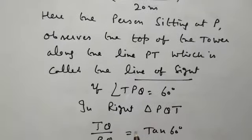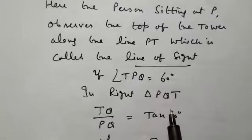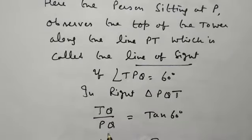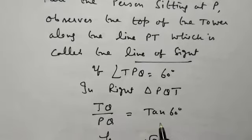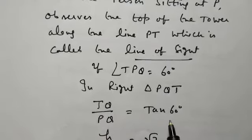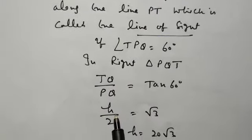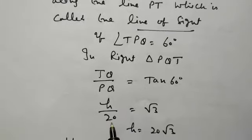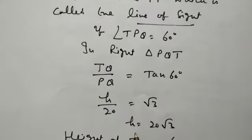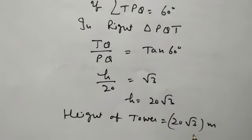In right triangle PQT, TQ is the perpendicular and PQ is the base for angle 60 degrees. So perpendicular divided by base equals tan 60. TQ is H and the base is 20. Tan 60 is √3. So height H equals 20√3. The height of the tower is 20√3 meters.